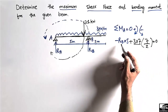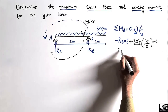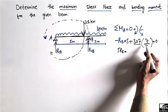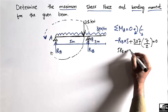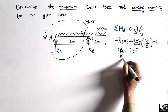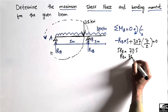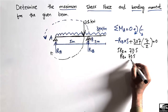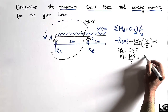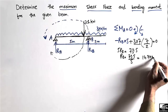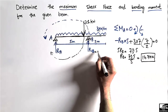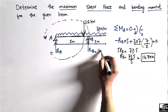Setting the summation of moments about A equal to zero and solving: 5·RB = 21 × (7/2) = 73.5. Therefore RB = 73.5 ÷ 5 = 14.7 kN. This is the support reaction at point B.